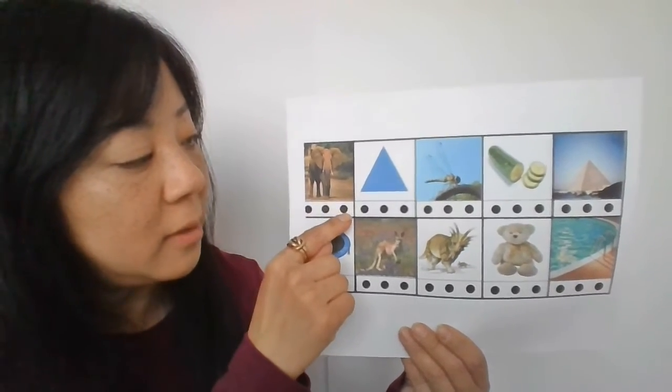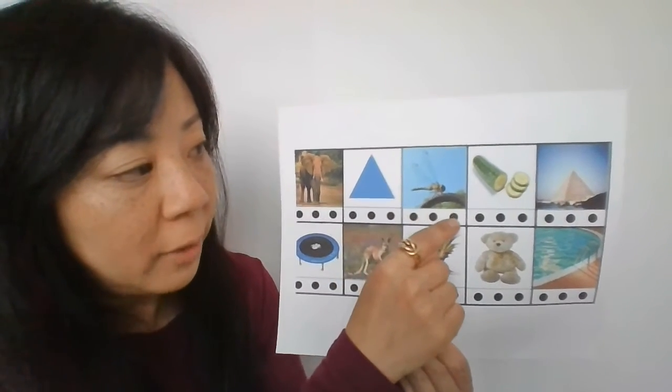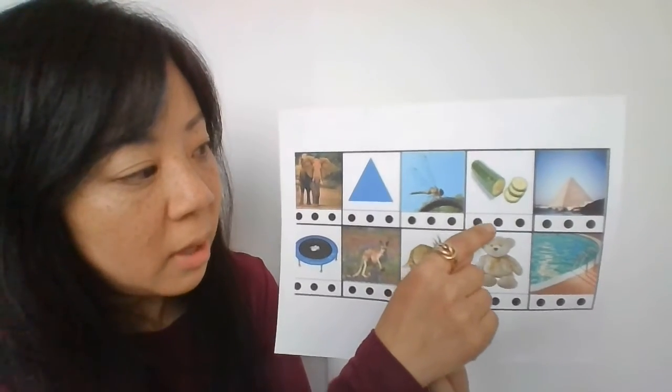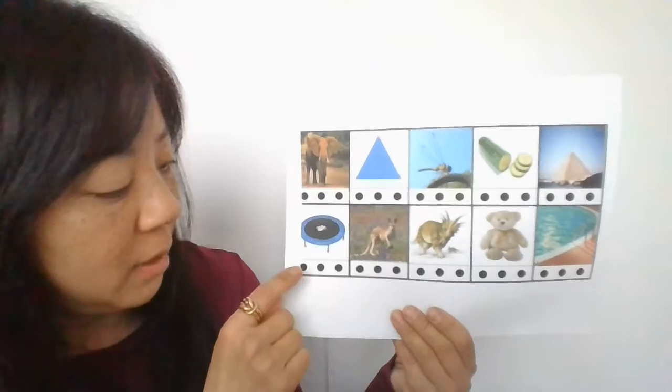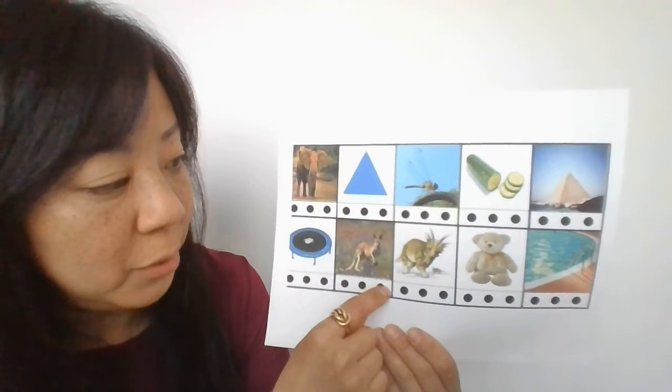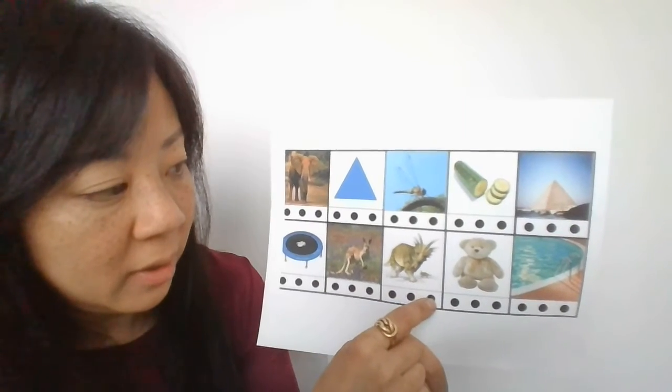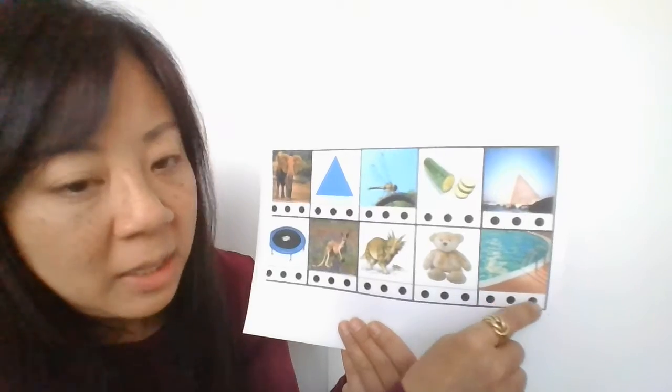Elephant. Triangle. Dragonfly. Cucumber. Pyramid. Trampoline. Kangaroo. Dinosaur. Teddy bear. Swimming pool.